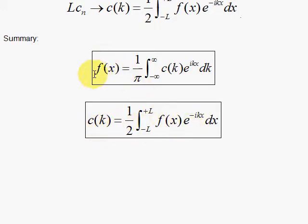Notice that when you build up F of X, think of that as building it up with a weighting factor here with each of the E to the plus IKX pieces. Then when you want to solve for the C of K, you have an E to the minus IKX. Here you have 1 over pi, here you have 1 over 2.